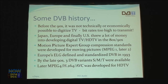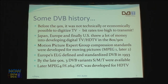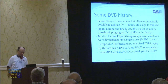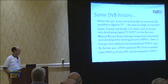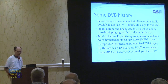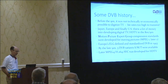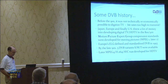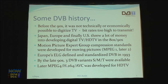Before the 1990s it just wasn't technically or economically possible to digitize TV — we didn't have fast enough computers or available memory. During the 80s and 90s manufacturers invested in development, MPEG compression codecs came about — MPEG-1 then MPEG-2, which DVD utilized — and the standard was finally developed by the Electronics Launching Group in 1993. By the late 90s there were three variants of DVB: satellite, mobile, and terrestrial. Later we had MPEG-4 H.264 AVC, developed for HDTV.